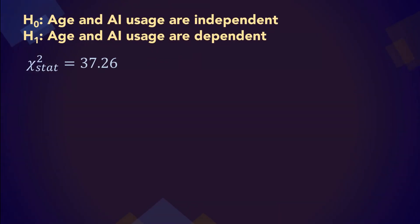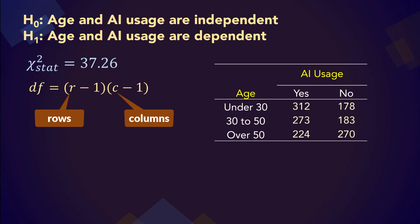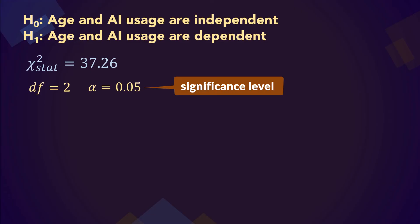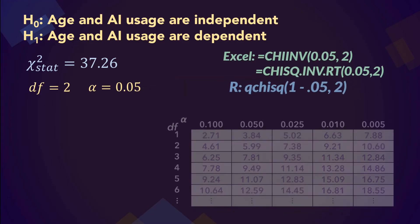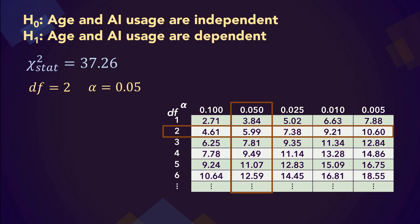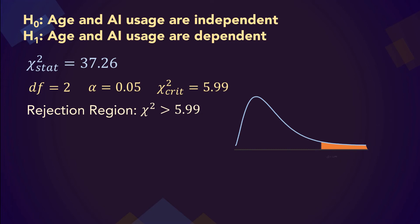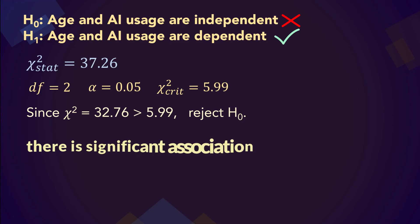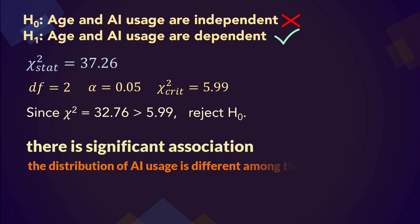The degrees of freedom for the chi-square test of independence is (number of rows minus 1) times (number of columns minus 1). Since we have 3 rows and 2 columns, the degrees of freedom computes to a value of 2. Suppose we're testing at significance level alpha of 0.05. With df = 2 and alpha = 0.05, we have a critical value of 5.99. We will reject the null hypothesis if our computed chi-square statistic is greater than 5.99. Since our chi-square statistic is 37.26, which is greater than 5.99, we reject the null hypothesis and conclude that age and AI usage are dependent — there is a significant association, or the distribution of AI usage is different among the age categories.